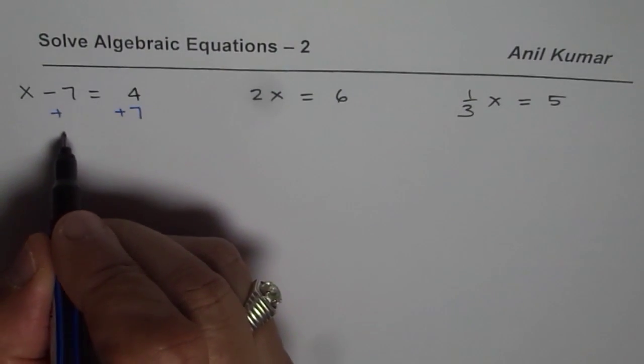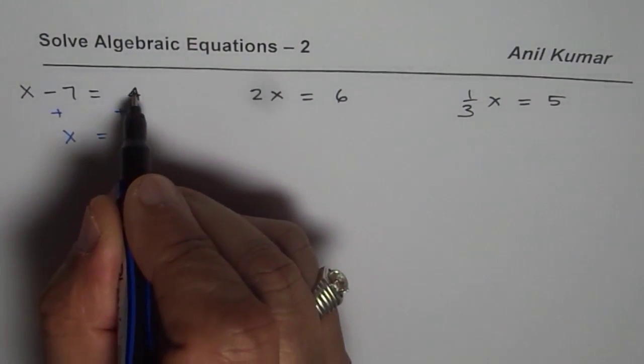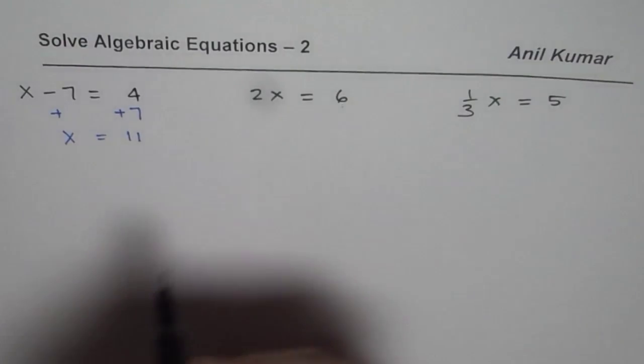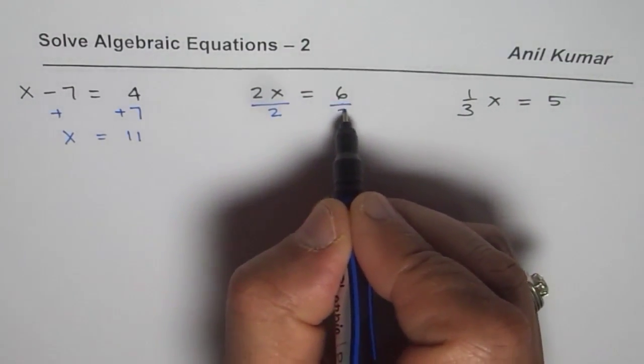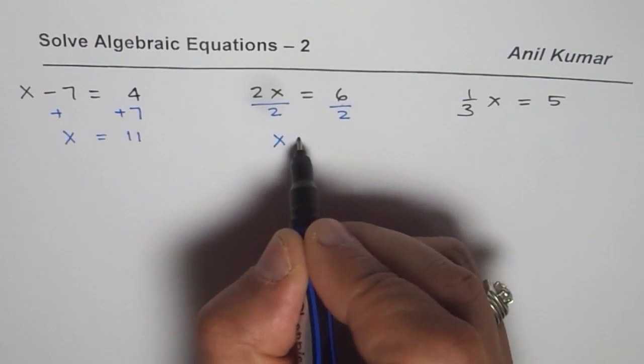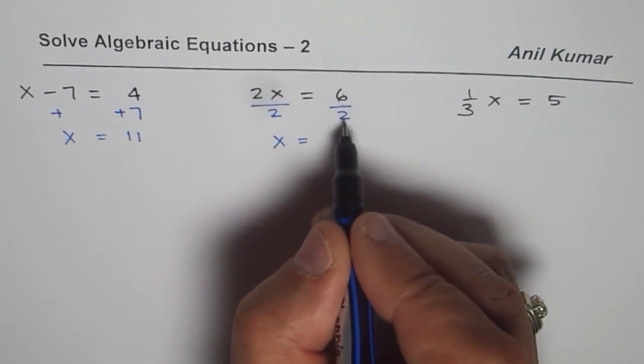we get here is x equals 7 plus 4 as 11. In this particular case we could divide by 2 on both sides and then get x equals 2 and 2 cancel, 6 divided by 2